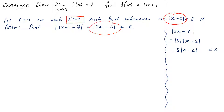I'm free to choose delta and epsilon has been fixed, so I'm going to choose delta to equal epsilon over 3. If |x - 2| is less than epsilon over 3, then overall 3|x - 2| — which is that multiplied by 3 — will be less than epsilon.